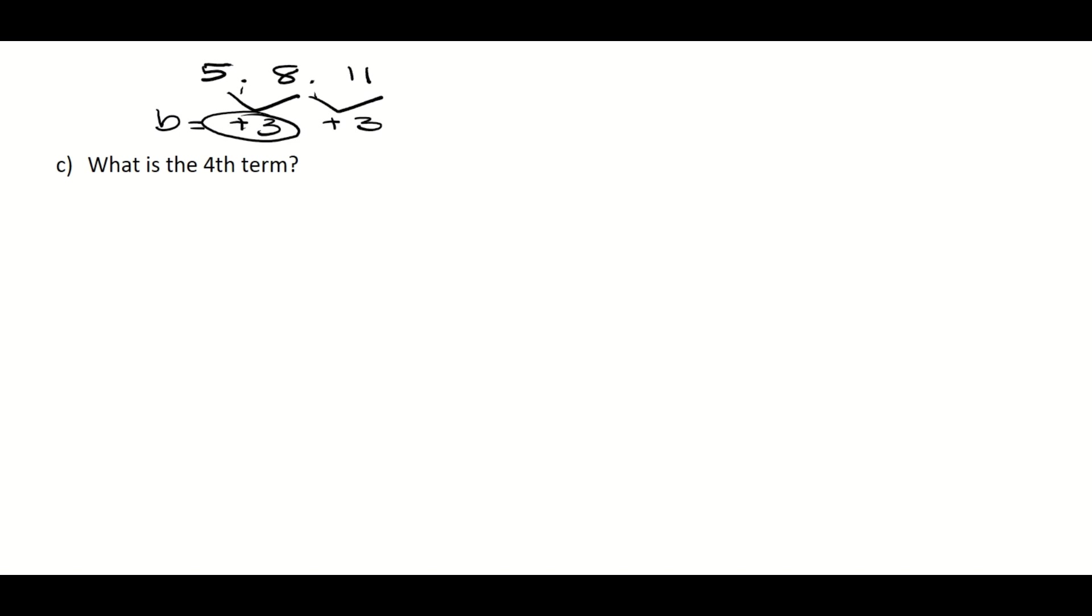So to get to our fourth term, the easiest way to do it is to say term 4 is equal to term 3 plus the constant difference, which was b. So term 4 is equal to term 3 plus the constant difference, which was 3. And what is term 3? Term 3 is 11. So term 4 is equal to 11 plus 3, which is 14. And that's term 4.